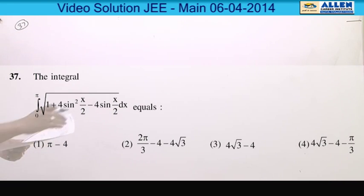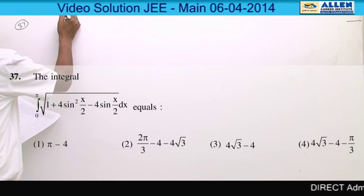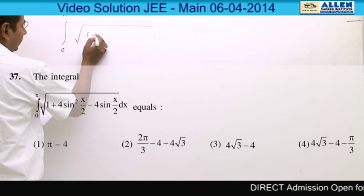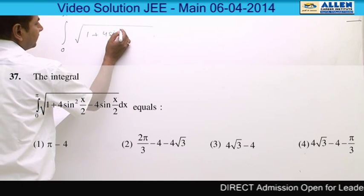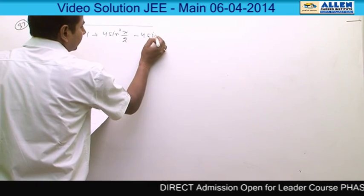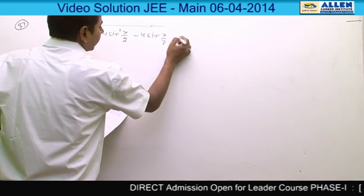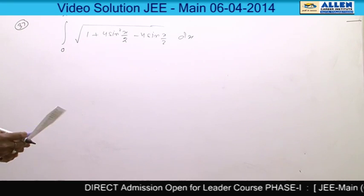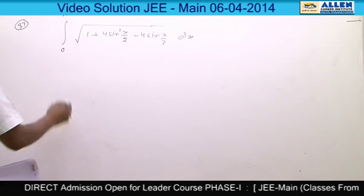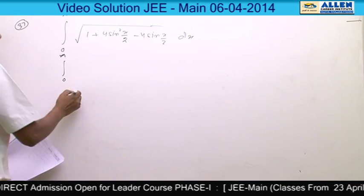Our next question is question number 37. This question is based upon definite integration. We have to evaluate integration 0 to pi under root of 1 plus 4 sine square x by 2 minus 4 sine x by 2 dx. If we examine the expression written inside the under root, this is a perfect square.